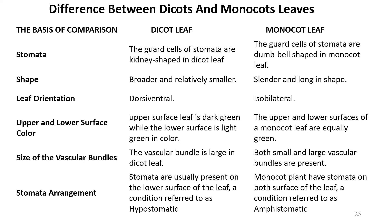The upper surface of the dicot leaf is dark green while the lower surface is light green in color. On the other hand, the upper and lower surfaces of monocot leaves are equally green. The vascular bundle is large in dicot leaves, whereas in monocot leaves both small and large vascular bundles are present.